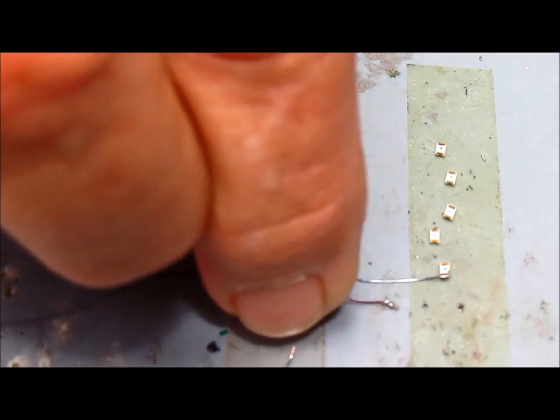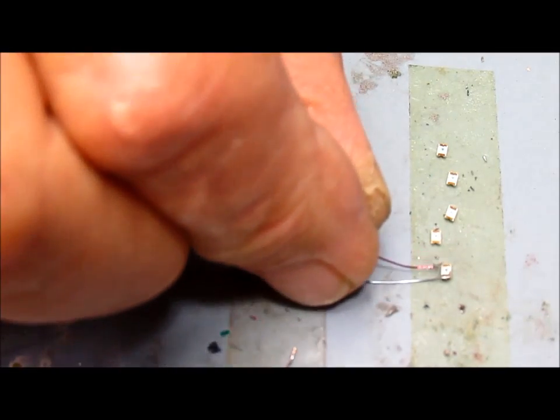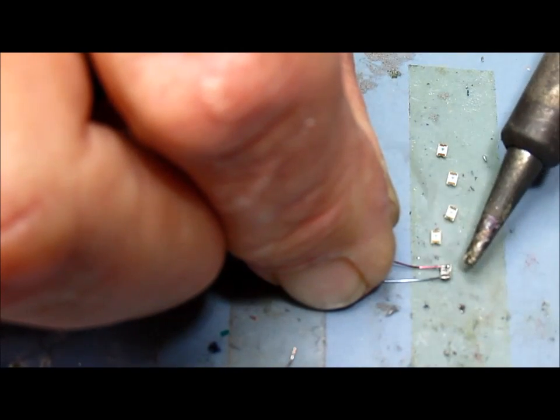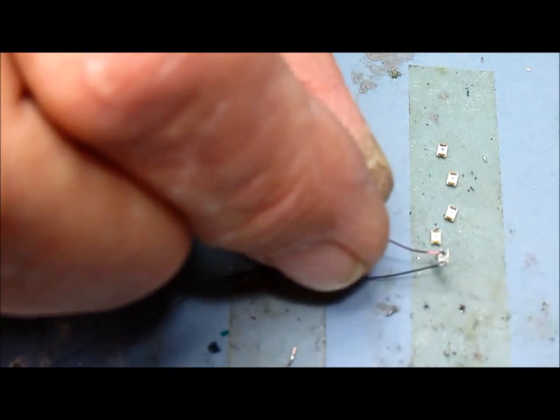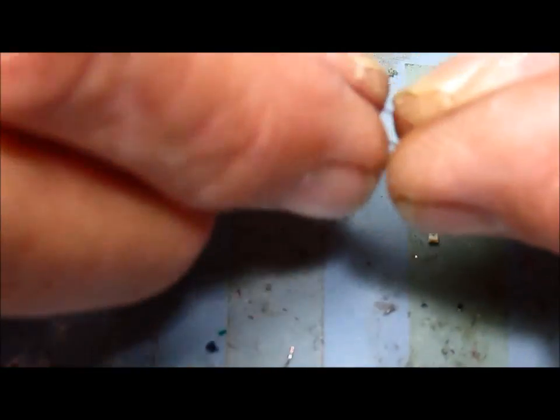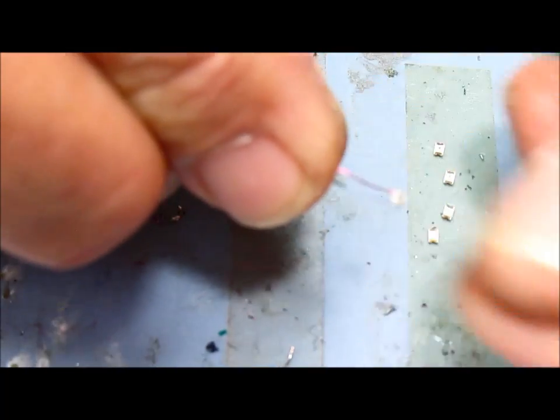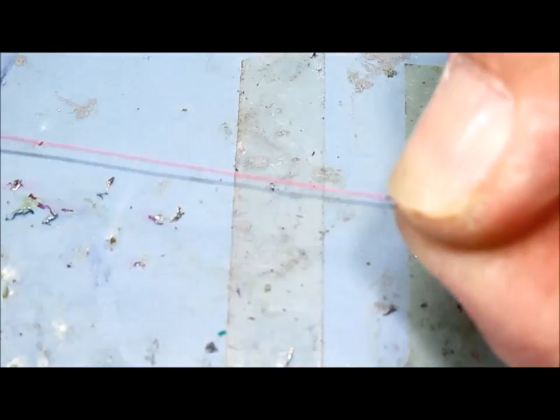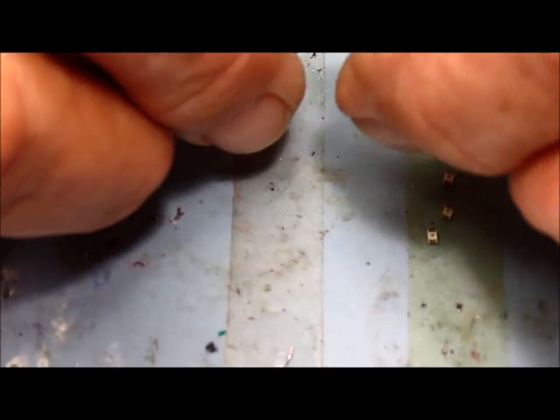Dip it into the solder paste, just a little tiny bit, you don't need much. And done. All right, then I'll just move that, clean the solder paste off with a bit of spit, then measure the wire to about 200 millimeters long.